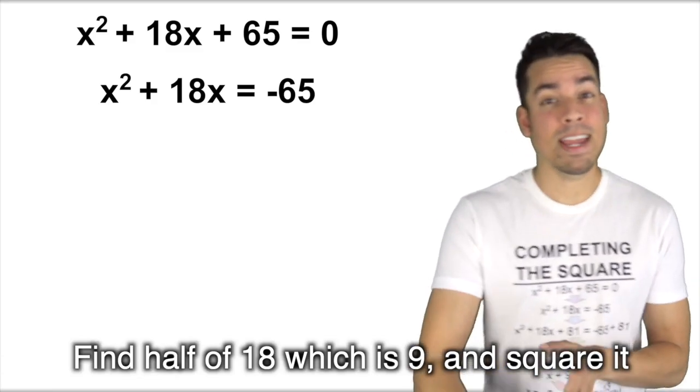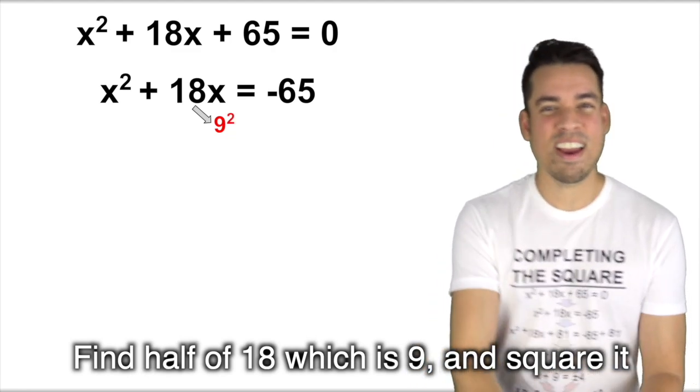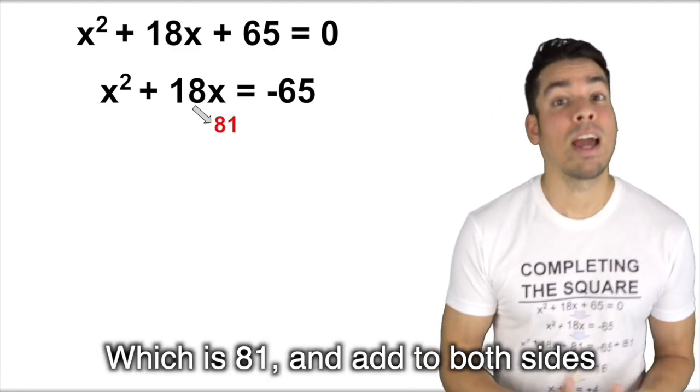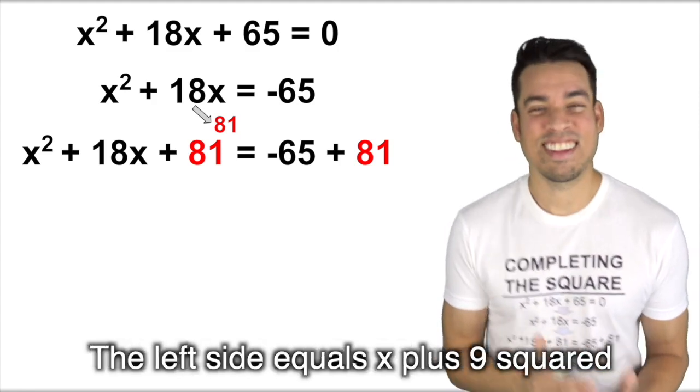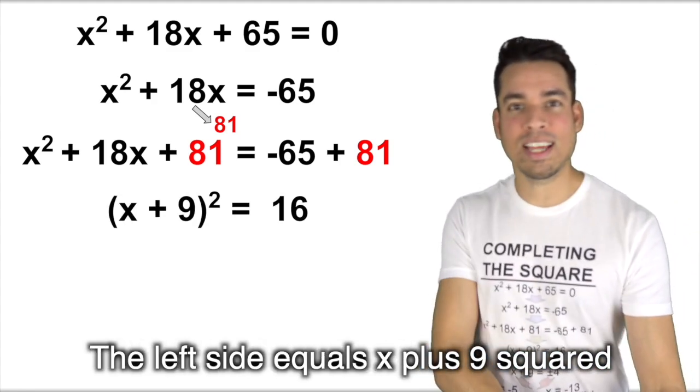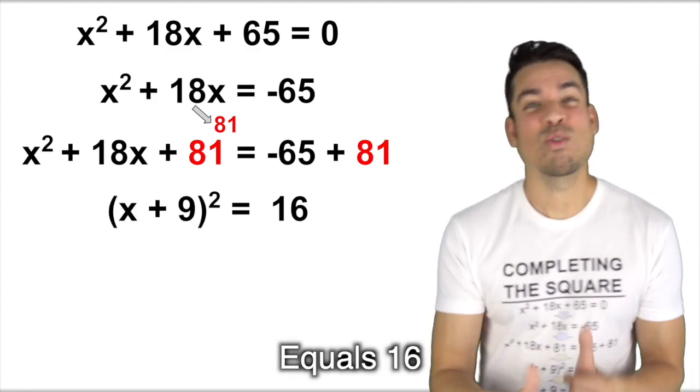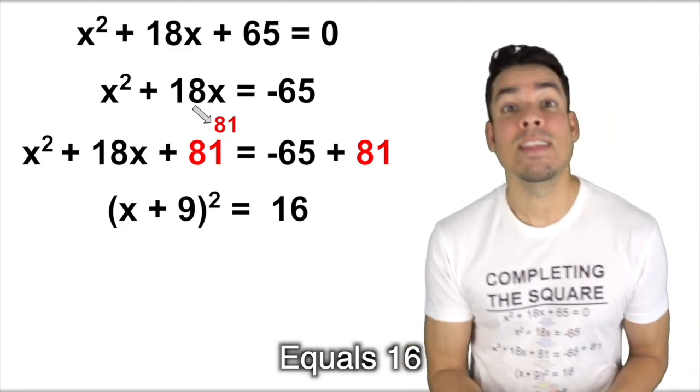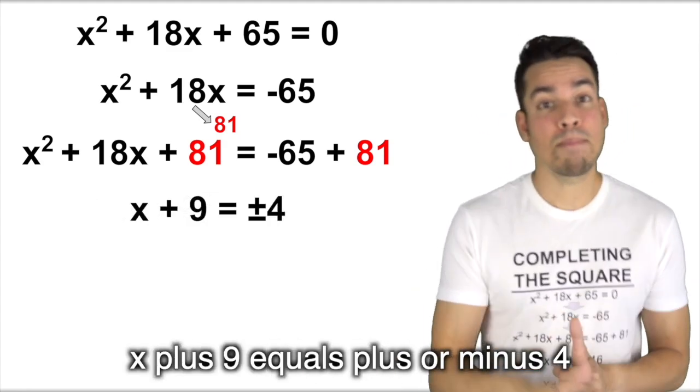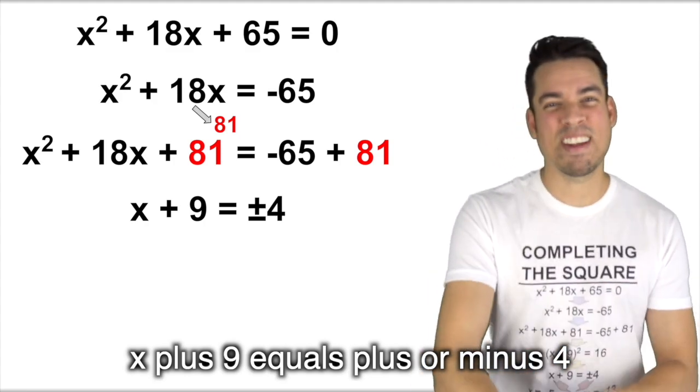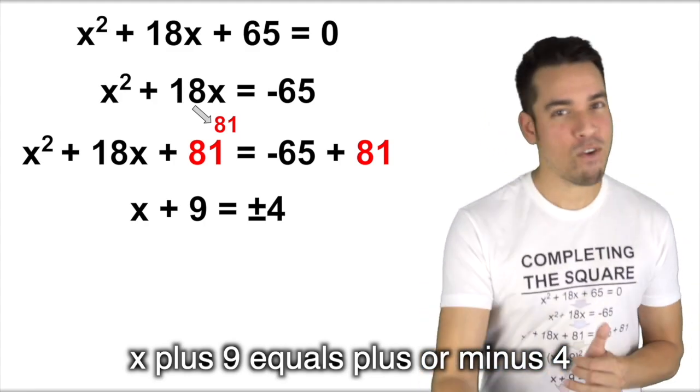Take half of 18, which is 9, and square it, which is 81, and add to both sides. Left side equals (x + 9)² equals 16. So take the square root: x + 9 equals plus or minus 4.